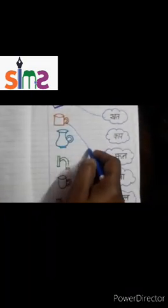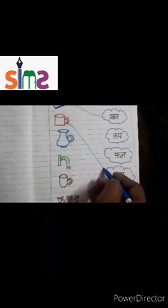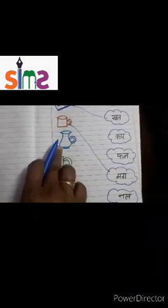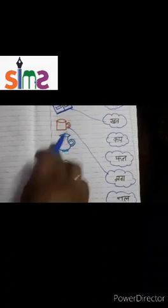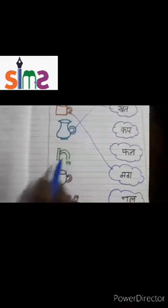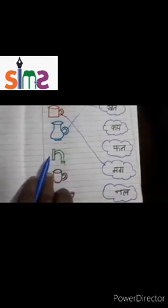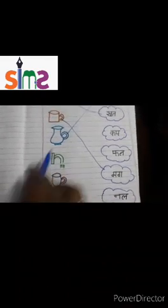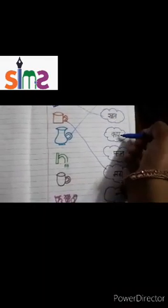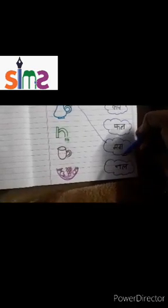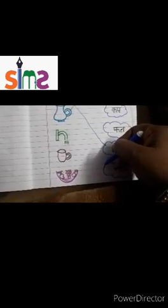So, mag ko hum its key name ke saath match karenge. Jag — jaga, jag. Jaga — jag. Hum picture ke saath mela renge. Nal — nala, nal. Khata — khat. Kapa — cup. Fala — fal. Maga — mag. Nala — nal. Nal ko hum its key picture ke saath yaha nilayenge.